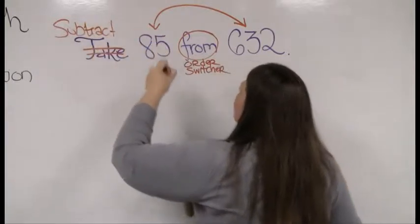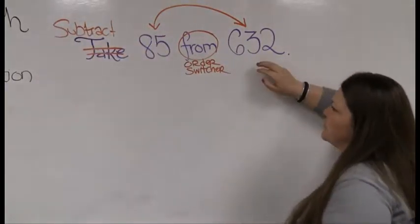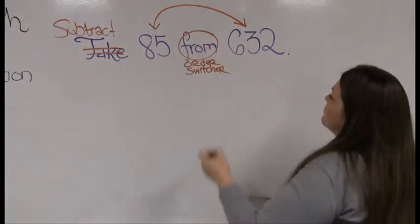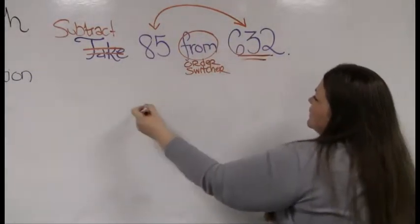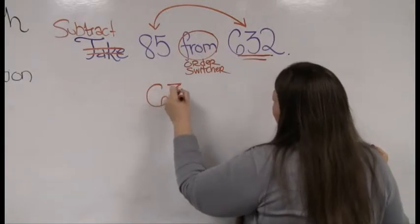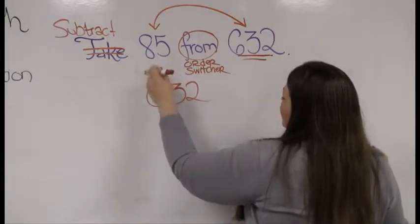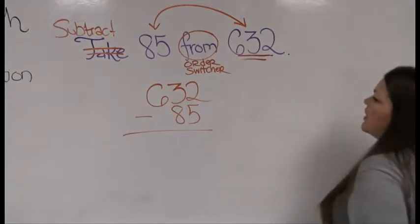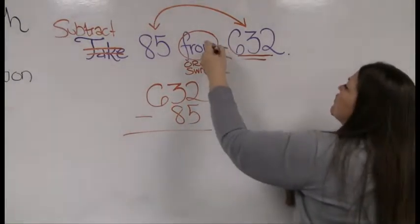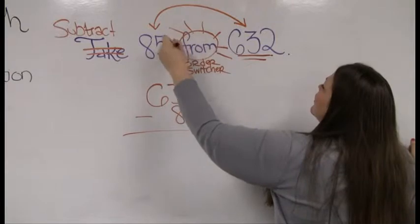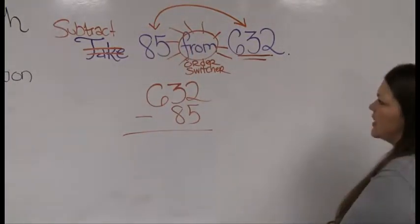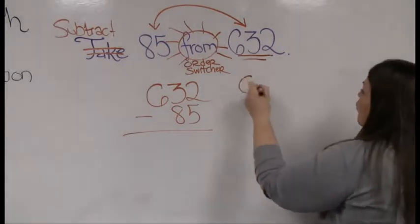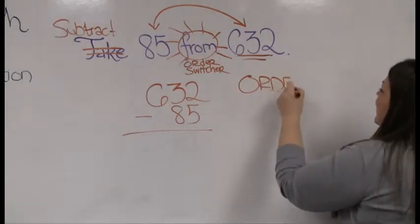If I say take 85 from 632, or subtract 85 from 632, the word 'from' is an order switcher, meaning that the number that comes last needs to come first in the problem, and the number that came first needs to come last. The reason I switched the order is because I saw this word 'from' that throws a lot of my students in a loop. Unlike with addition, with subtraction order matters. You've got to pay attention.